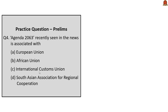Question 4: Agenda 2063, recently seen in the news, is associated with which of the following? The options are European Union, African Union, International Customs Union, and South Asian Association for Regional Cooperation. During our discussion, we saw that Agenda 2063 is the master plan for transforming Africa into a global powerhouse, determined to achieve this in a 50-year period from 2013 to 2063. The correct answer is the African Union.